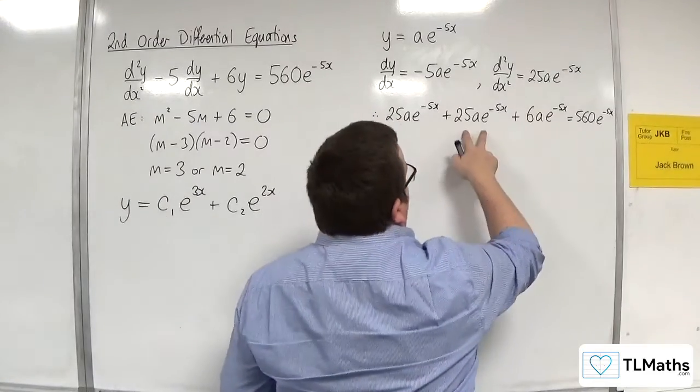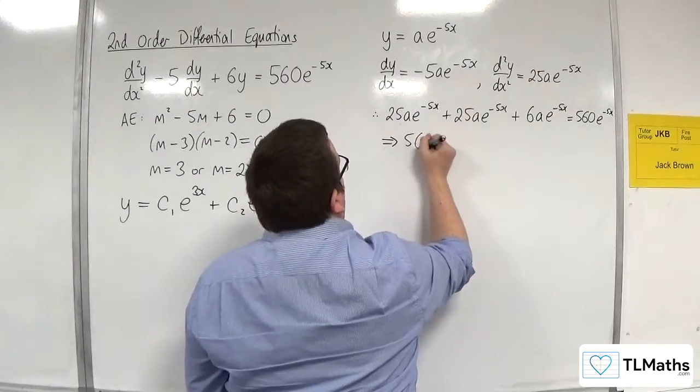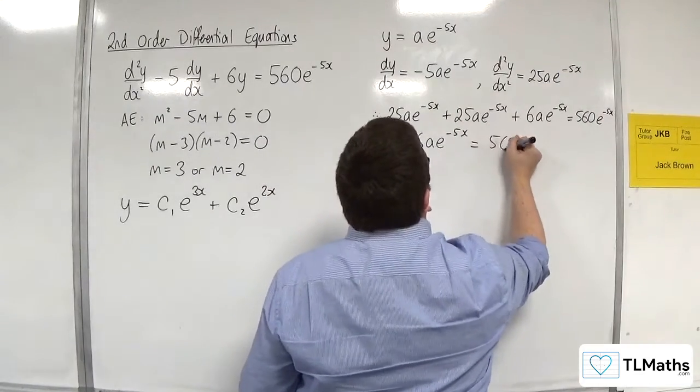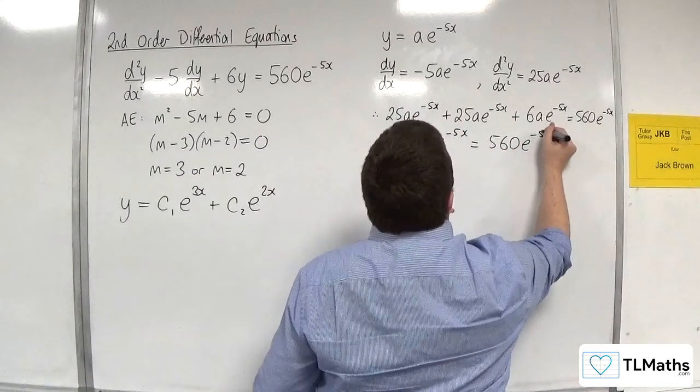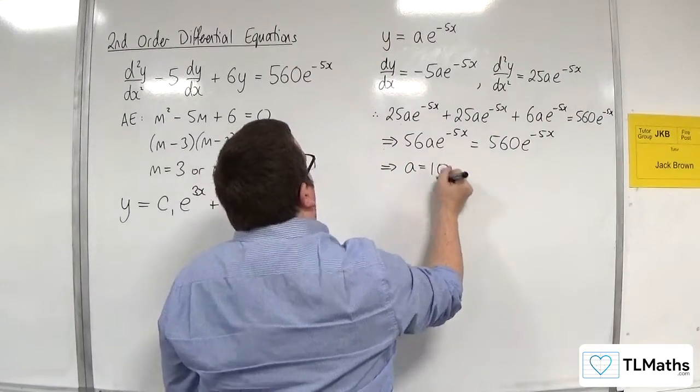So we've got 25, 25 plus 6, so 56a e to the minus 5x. It's got to be equal to 560 e to the minus 5x. So clearly a would have to be equal to 10.